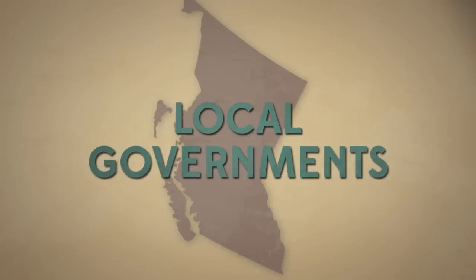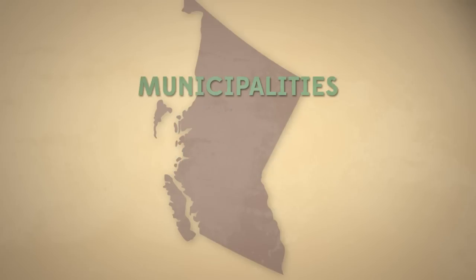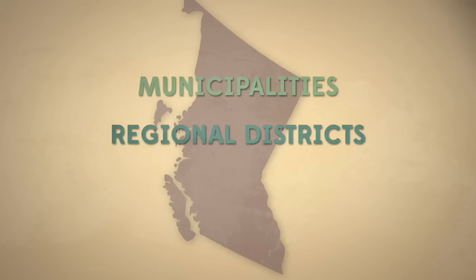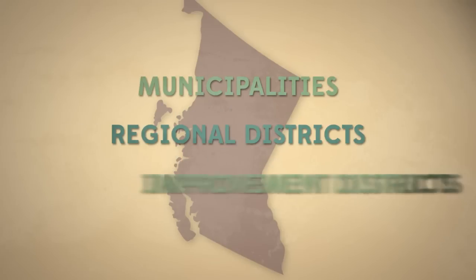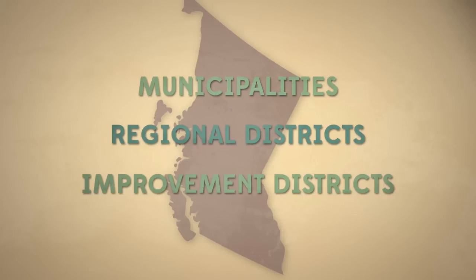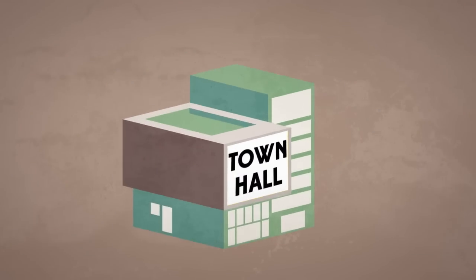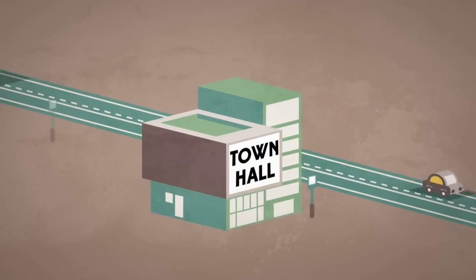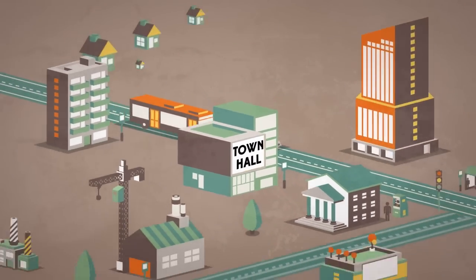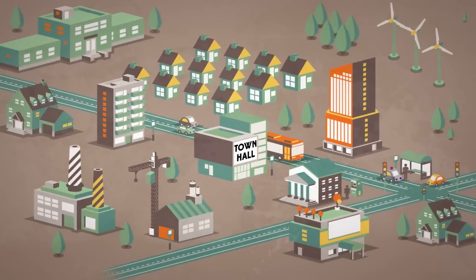The local government system in British Columbia is comprised of municipalities, regional districts, and improvement districts. Local governments are responsible for the planning, growth, and safety of their community.